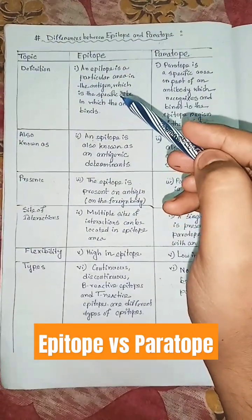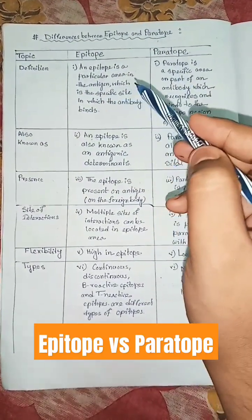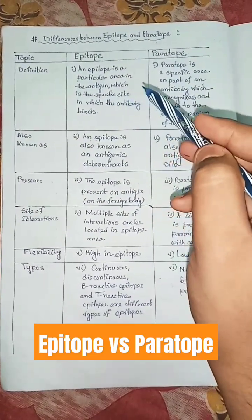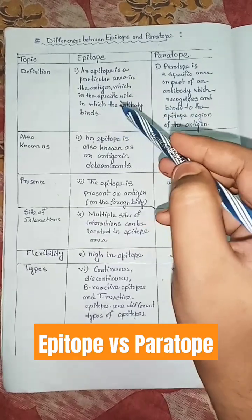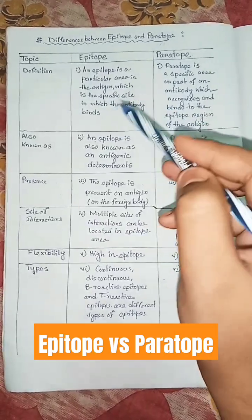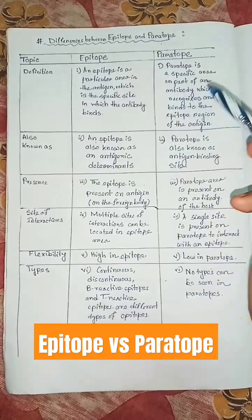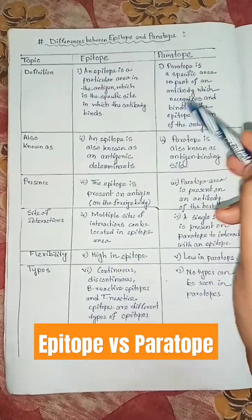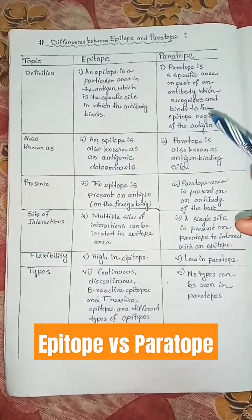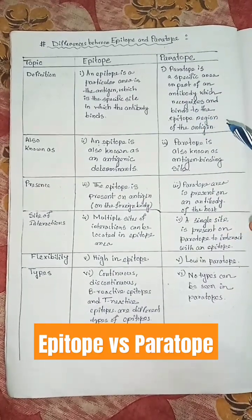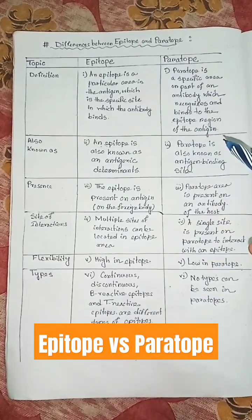Differences between epitope and paratope. An epitope is a particular area in the antigen which is the specific site in which the antibody binds. A paratope is a specific area or part of an antibody which recognizes and binds to the epitope region of the antigen.